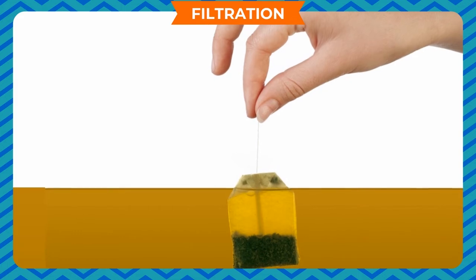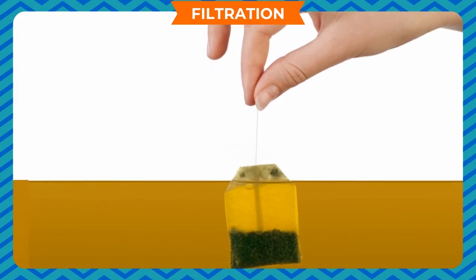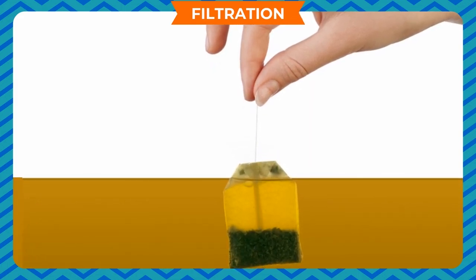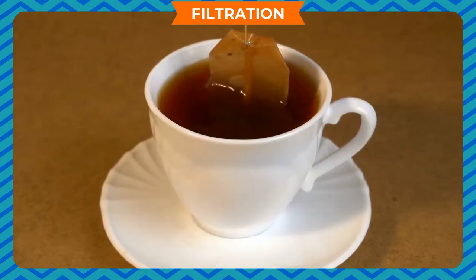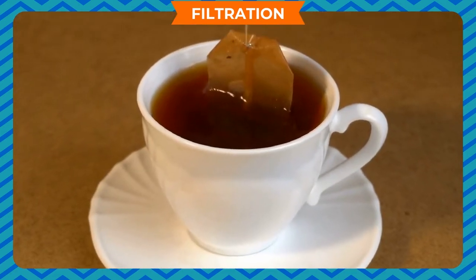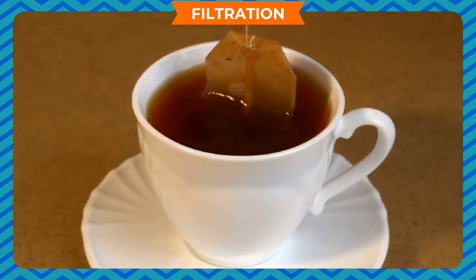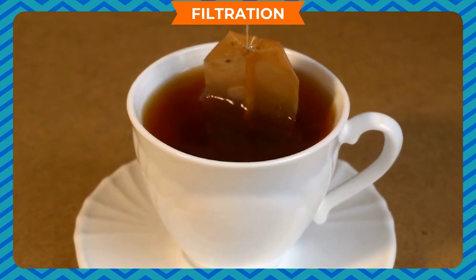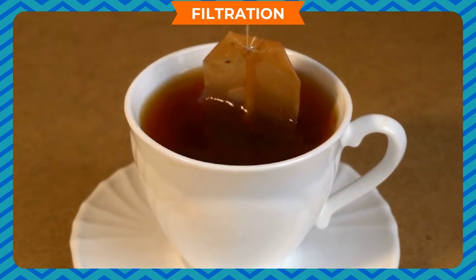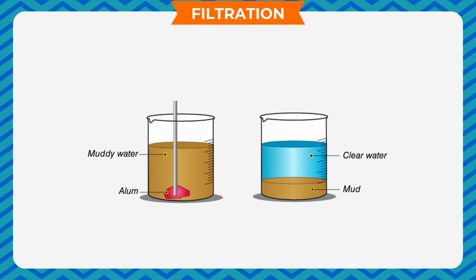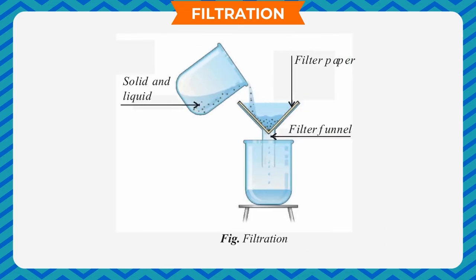If a solid dissolves in a liquid, decantation cannot be used to separate them. Filtration: to separate tea leaves from tea, we pour the tea through a strainer — a wire or plastic mesh. The tea leaves are left behind in the strainer and the tea is collected below. This process is known as filtration. The strainer acts as a filter. For fine particles like mud, a filter paper is needed as the particles are too fine to be stopped by a strainer.